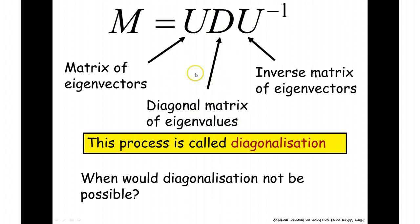Well, it's not going to be possible if the matrix of eigenvectors is singular, it wouldn't have an inverse. So if the determinant of this was zero, it wouldn't have an inverse. So I wouldn't be able to find the inverse matrix of eigenvectors. So that would be a special case where it's not possible.